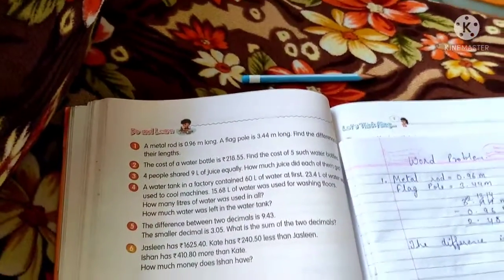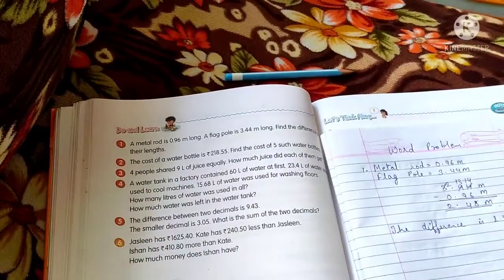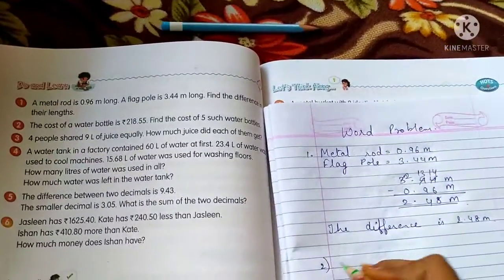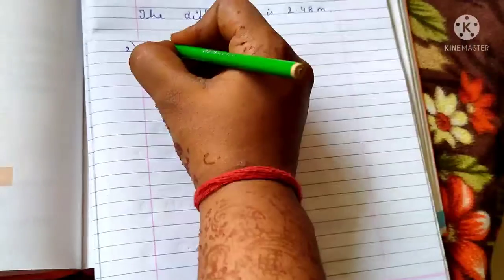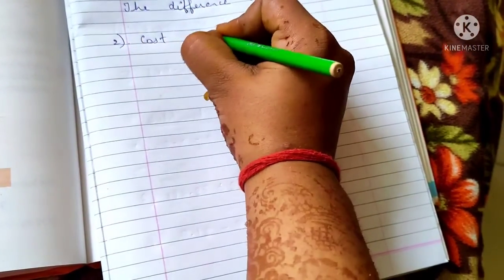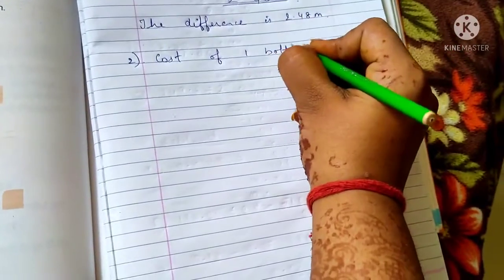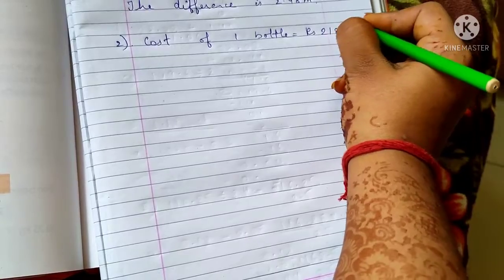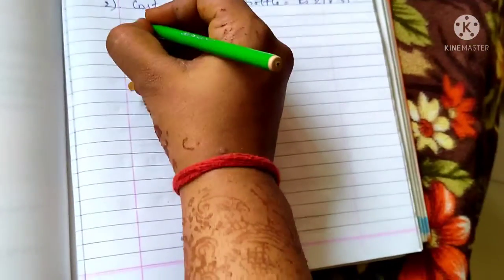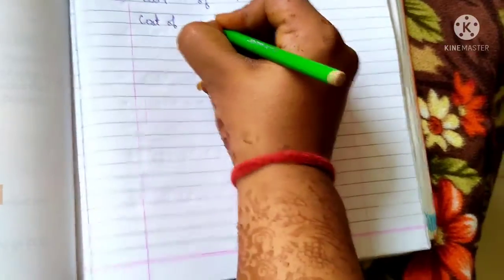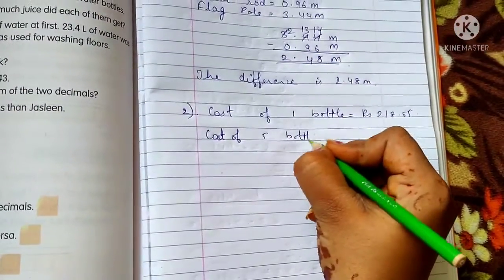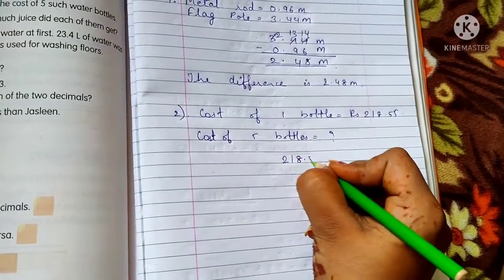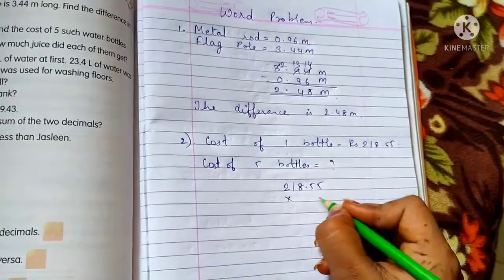Now see the second one. The cost of water bottle is 218.55. Find the cost of 5 such water bottles. So what is the cost of 1 water bottle? Rs. 218.55. So we have to find the cost of 5 bottles. So what will we do? 218.55 into 5.